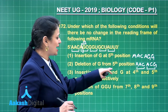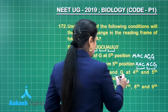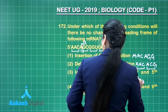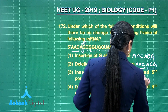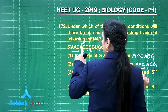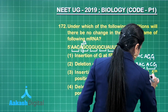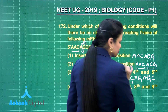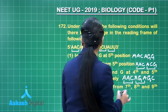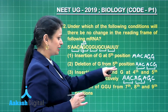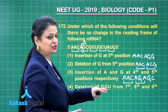Option three: insertion of A and G at the fourth and fifth positions. With A inserted at the fourth position and G at the fifth, the sequence becomes AAC, then A, then G, then AGC. Looking at the reading frame, the first codon is AAC, but the second codon is now AGA — not AGC. Again, there is a change in the reading frame.